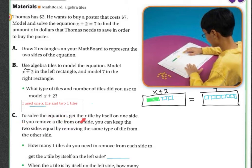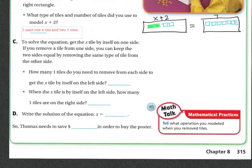To solve the equation and get the X tile by itself on one side, you need to remove a tile from one side and keep both sides equal by removing the same tile from the other side. Whatever I do to this side of the equation, I have to do to the other side. My ultimate goal is to get X alone, so I need to remove both of the one-tiles.